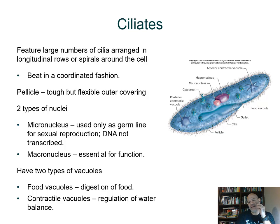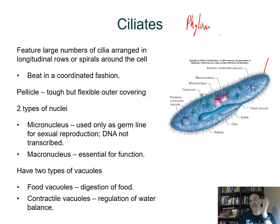Here's the sexual cycle of Paramecium specifically — the process is called conjugation, the same name as in bacteria but different because these are eukaryotes. We follow two individuals of two mating types, indicated here by coloring the nuclei different colors — purple and pink mating strains — so we can keep track of the nuclei.